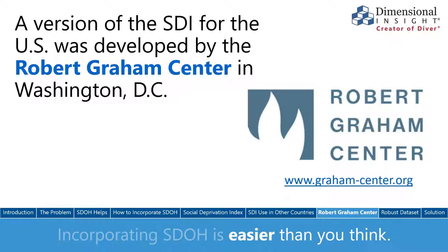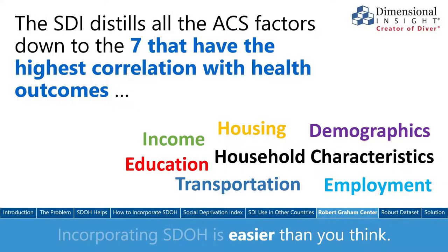We also discovered a variant of the Social Deprivation Index created specifically for the U.S. using social determinants information from the American Community Survey's five-year estimates. The Robert Graham Center, a health-focused think tank based in Washington D.C., did the research, analysis, and data science to determine which social determinants factors have the highest correlation with health outcomes. They selected seven factors and combined them into a social deprivation index, weighing them according to their influence on outcomes. The Graham Center's website provides data sets with both the SDI and the contributing factors for several census geographies such as census tracts, zip code, county, and primary care service areas.